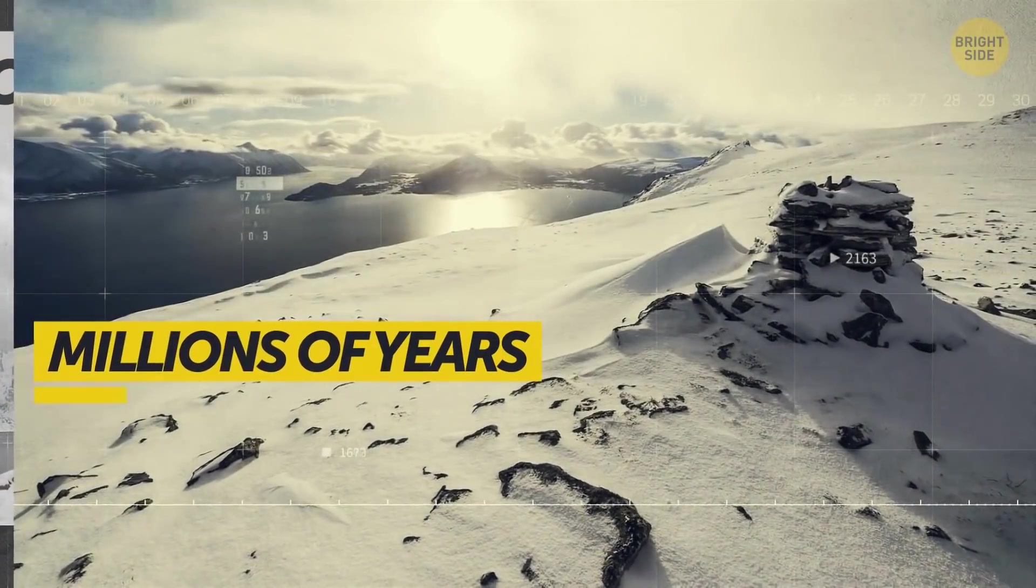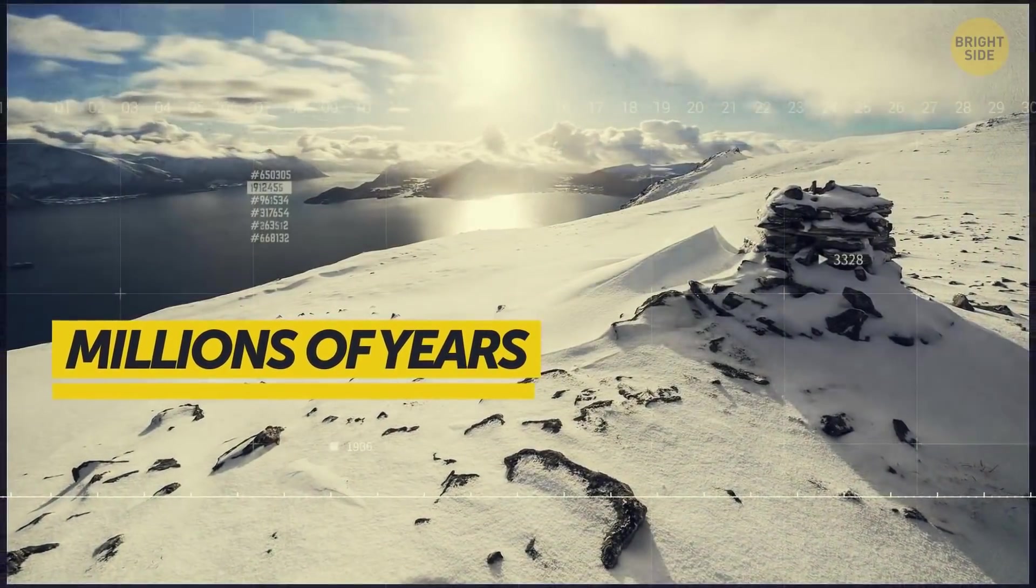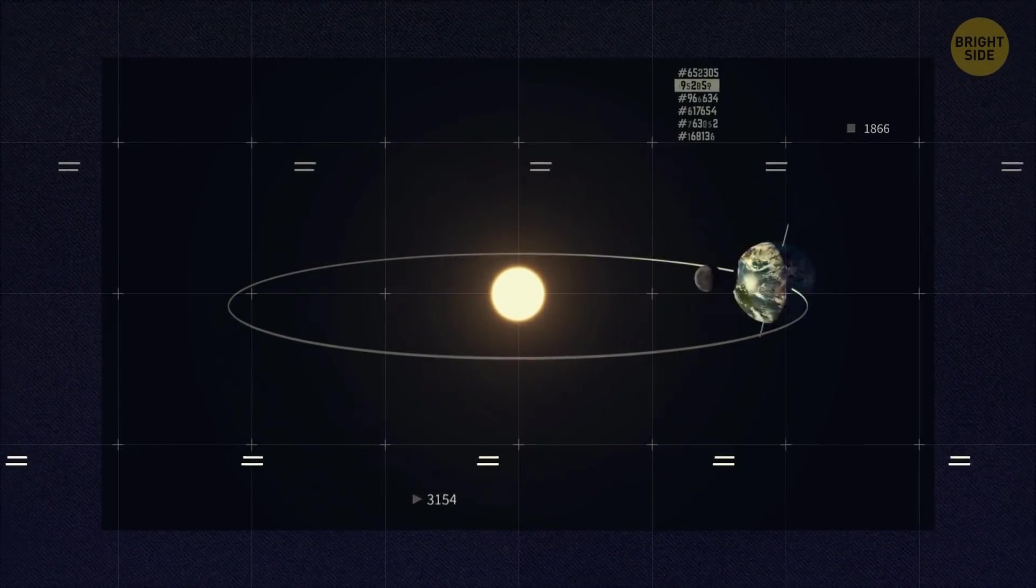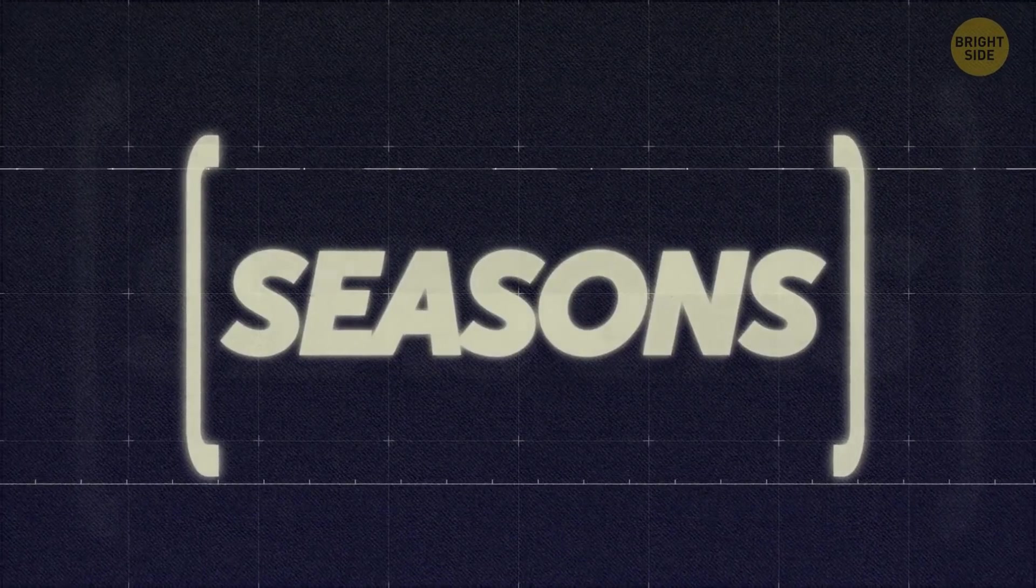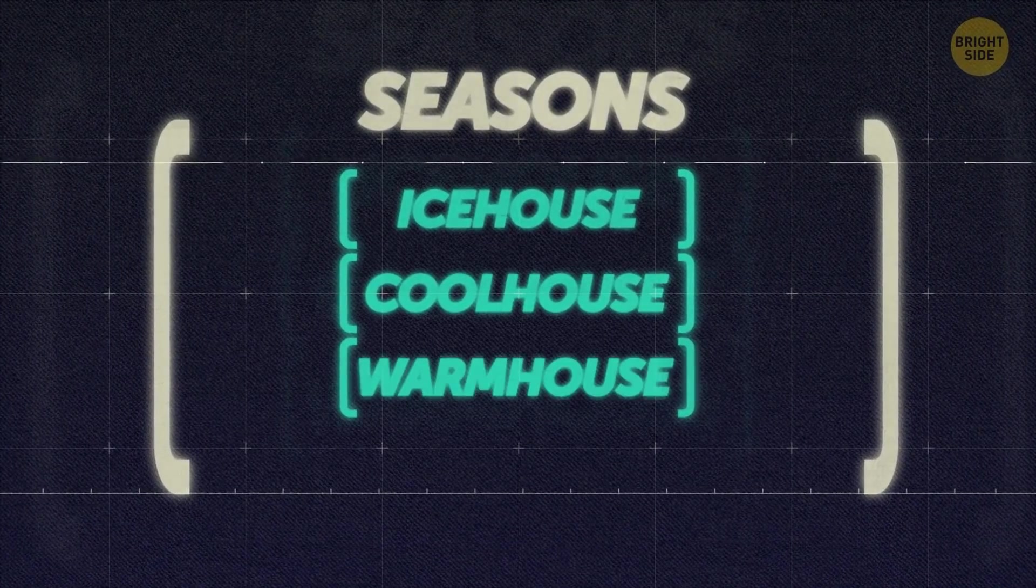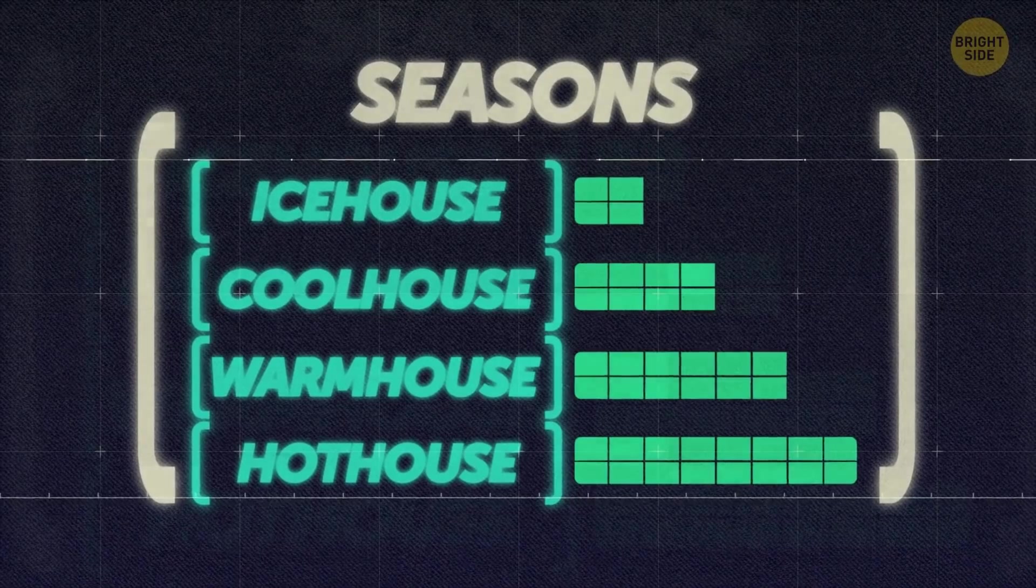Sometimes, these states could last for millions of years, and they're all related to how the Earth is positioned relative to the Sun. The seasons were dubbed Ice House, Cool House, Warm House, and Hot House, according to the prevalent temperatures.